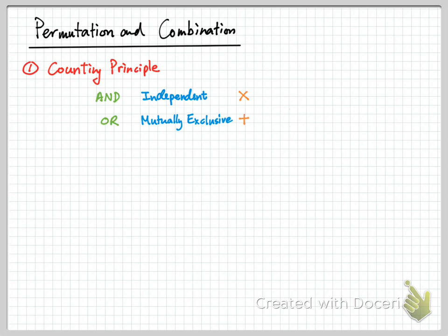In a nutshell: if events are independent, we connect them with AND and the math is to multiply them. If they are mutually exclusive events, we connect them with OR and we add them together.